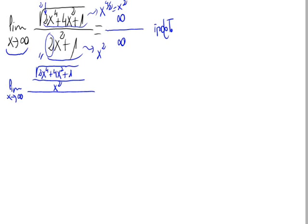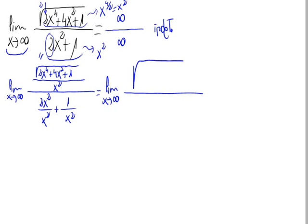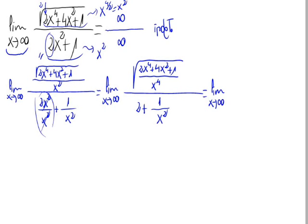Let's divide the numerator and now the denominator. Let's write it this way to make it easy: 2x squared divided by x squared, plus 1 divided by x squared. And this limit is equal to... Let's get the x squared on the numerator inside of the root, so it would go as x to the fourth. And simplifying the denominator, we would have 2 plus 1 divided by x squared.